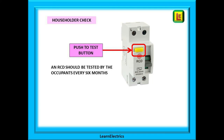Every RCD type device will have a test button on the front, either marked 'test' or just 'T'. The householder should be encouraged to press this test button every six months to ensure that the RCD is operating correctly mechanically. The RCD can be reset by lifting the on/off switch into the up position. It will of course mean the resetting of clocks and timers on that circuit, but this is a small price to pay for the knowledge that the RCD is continuing to protect the householder and their family. A good time to test the RCDs in the property is when the clocks are adjusted twice a year for summer time and winter time hours.